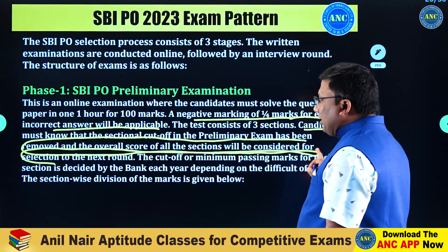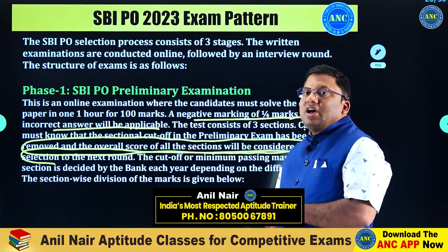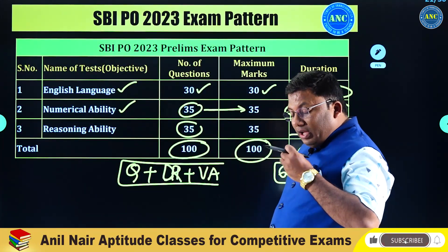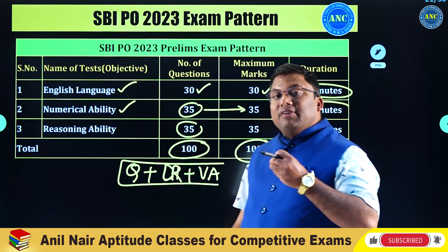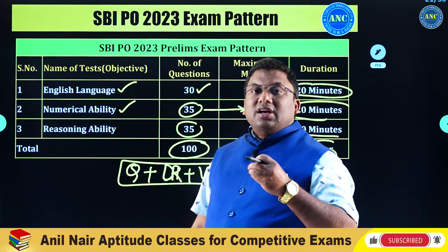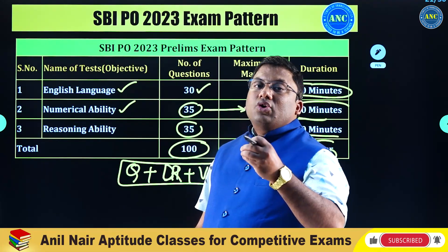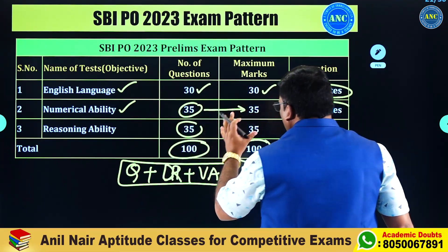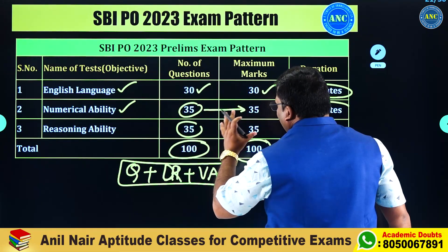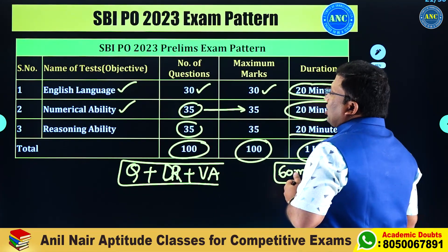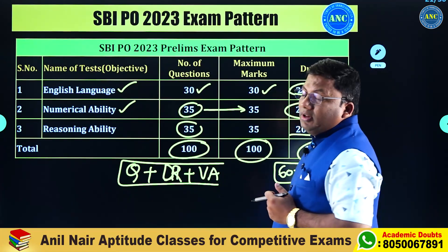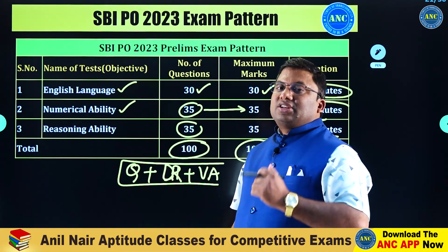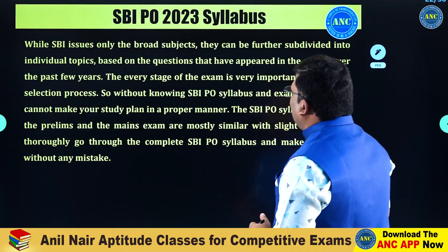The cutoff or minimum passing marks for each section is decided by the bank each year depending upon difficulty. Only if you qualify the prelims examination — meaning your score is greater than the cutoff set by SBI PO prelims authority — will you get a chance to enter the mains examination.